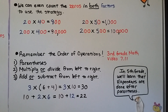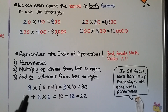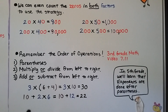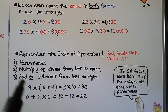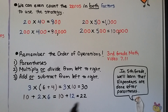Remember the order of operations from third grade math: parentheses first, then multiply or divide from left to right, then add or subtract from left to right. For 3 times (6 plus 4), we do 6 plus 4 first because it's in parentheses, getting 10, so 3 times 10 equals 30. For 10 plus 2 times 6, we multiply before we add: 2 times 6 is 12, so 10 plus 12 equals 22.